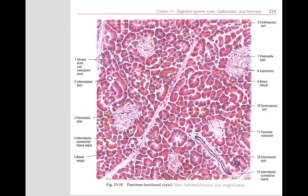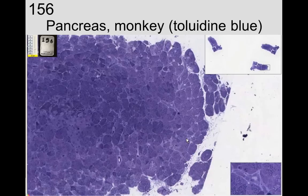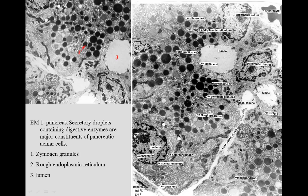Remember the pancreatic acinar cells, where you have the zymogen granules on the apex. If you look at that with toluidine blue, you can see the zymogen granules, and indeed they are inclusions, usually in the apex of the cell to be discharged. We can see the host of these granules here — inclusions or secretory product. At the ultra-structural level, we can see the zymogen granules themselves, as they are somewhat less condensed, then more condensed, ultimately becoming very condensed for exocytosis on the surface whenever the cell is induced to do so.